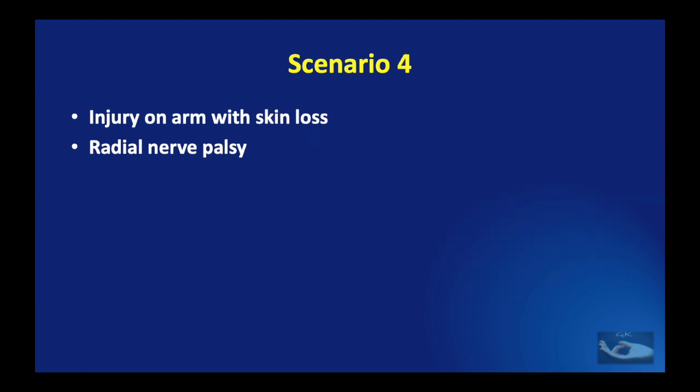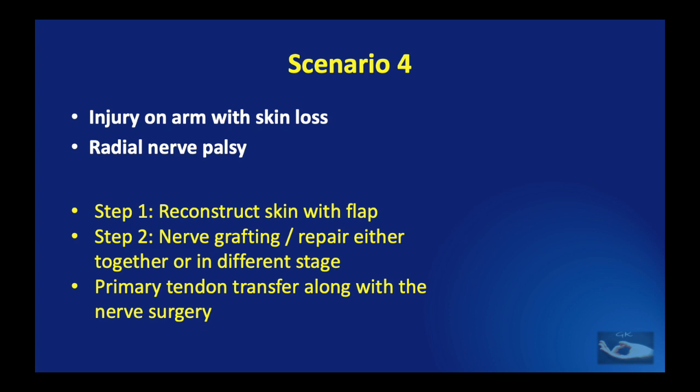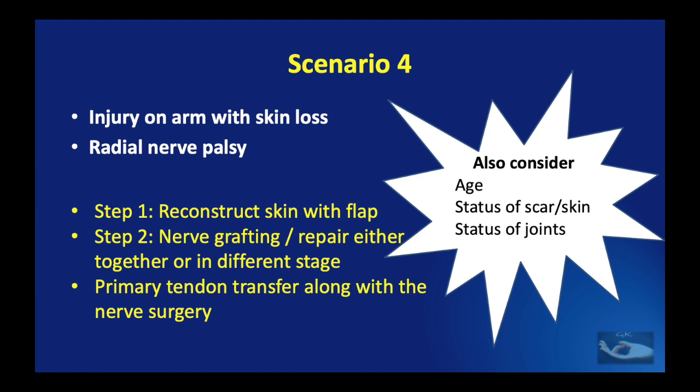The fourth scenario is a less common one: injury on the arm with skin loss and a loss of a segment of the radial nerve with palsy — as in a patient who has had an electrical burn on the arm with loss of skin, soft tissues, muscles, and a segment of the radial nerve. When faced with such a situation, we need to plan for a staged reconstruction. The first step is to reconstruct the skin with a flap cover. The second step is nerve exploration and grafting or repair, either together or in a different stage. In such situations, healing of the nerve graft may not be optimal, and hence a primary tendon transfer should be done along with the nerve surgery. We also need to consider the age, the status of the scar and skin, and the status of the joints — unless the joints are soft and supple in the hand, the nerve reconstruction stage should be deferred.